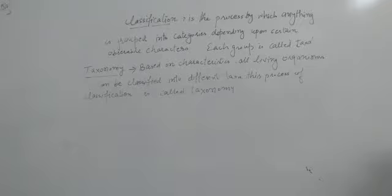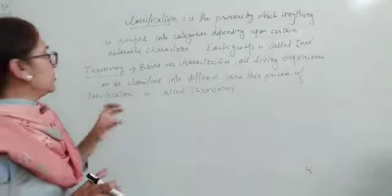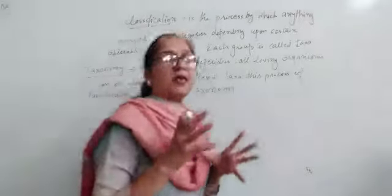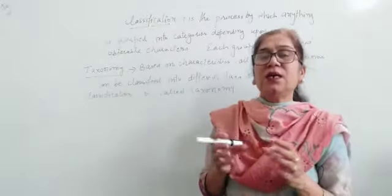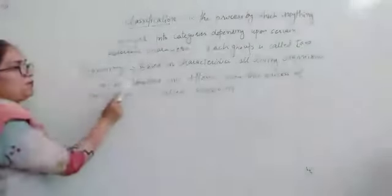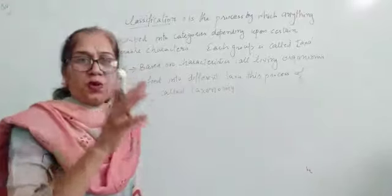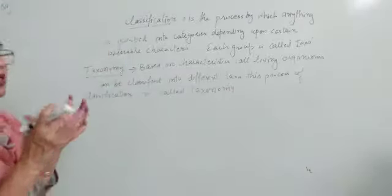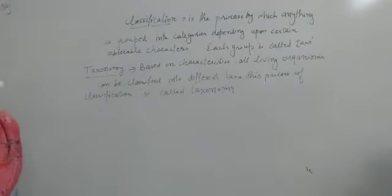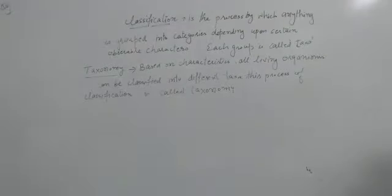What is taxonomy? Taxonomy is the process or the branch in which we make groups depending upon certain characteristics. Based on the characteristics, all living organisms can be classified into different taxa. This process of grouping living organisms depending upon certain characteristic features, we call it taxonomy.